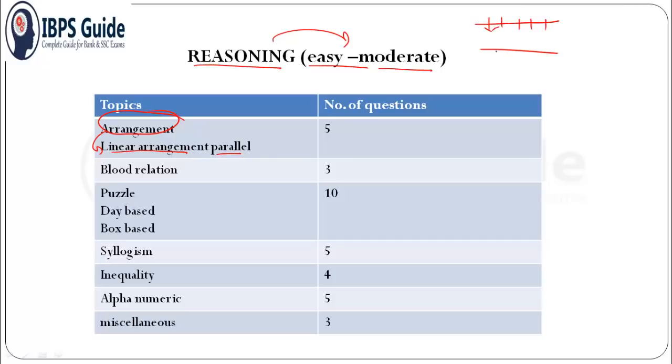These people are facing south and these are facing north, something like this. Total five questions were asked from this type of puzzle. Blood relation had three questions. Puzzles were asked - day based and box based.